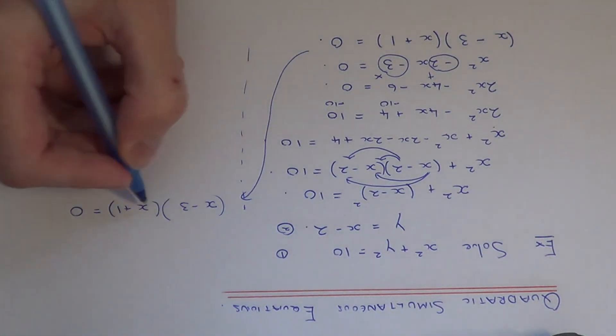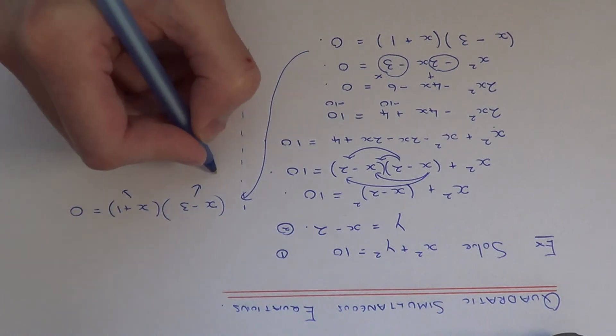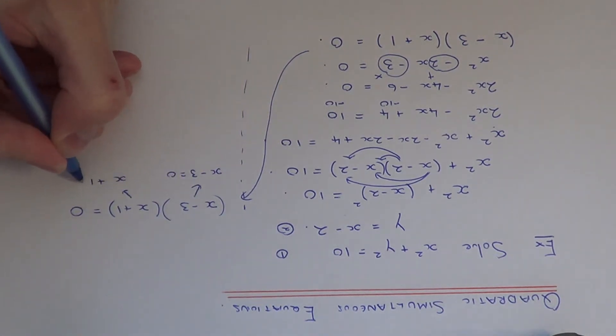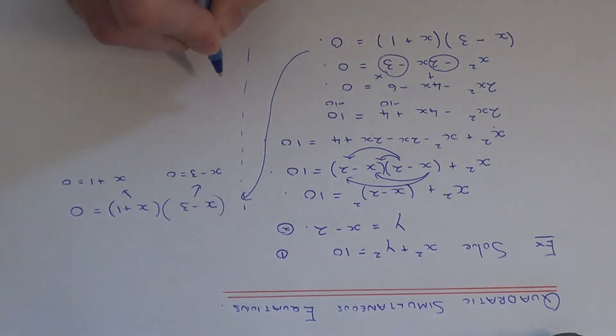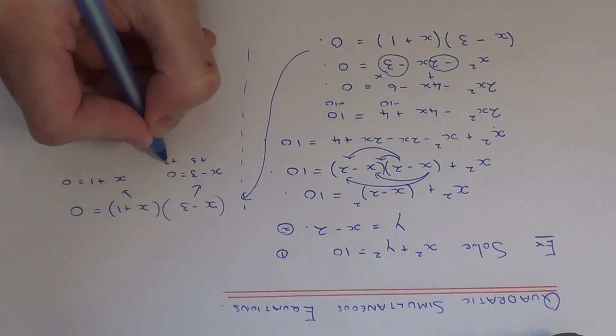So we just now need to solve this equation here. We've got two answers. So it's either when x minus 3 equals 0, or x plus 1 equals 0. So if we solve this equation first by adding 3, we get x equals 3,